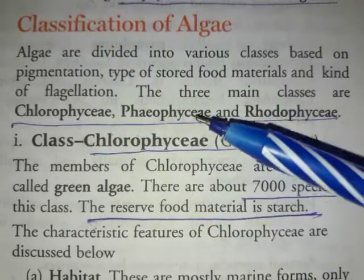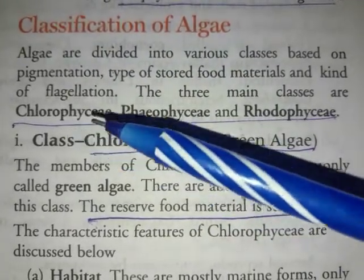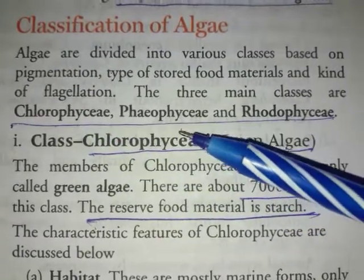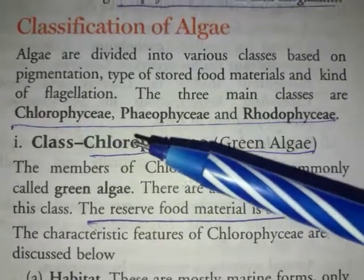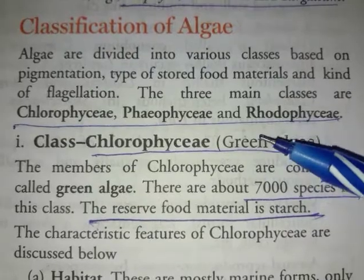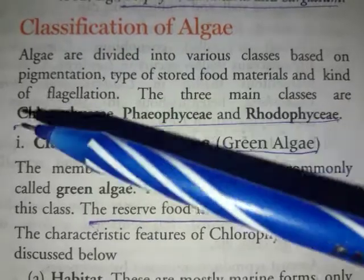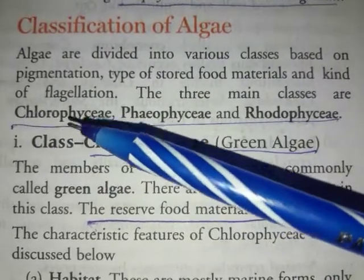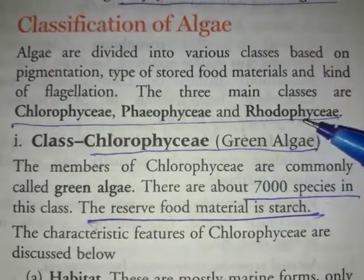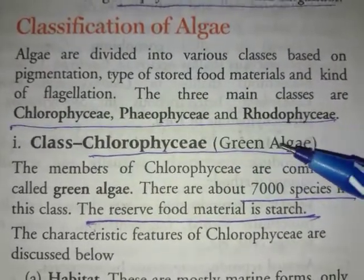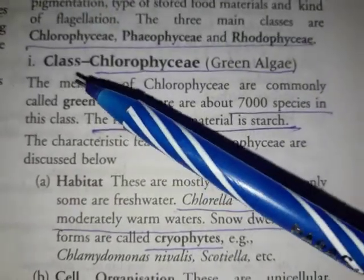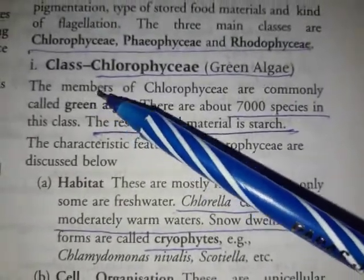The three main classes are Chlorophyceae — the green algae, Phaeophyceae — the brown algae, and Rhodophyceae — the red algae. Today we will discuss the first class.